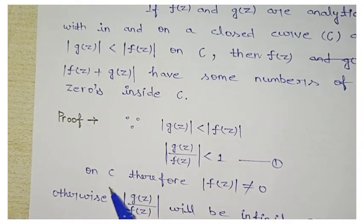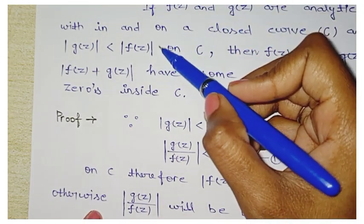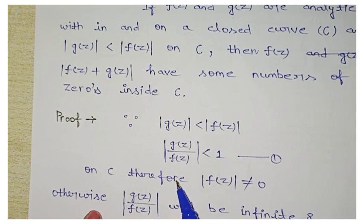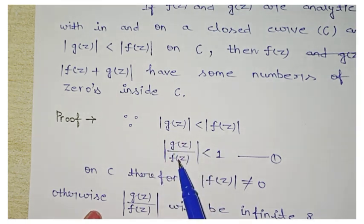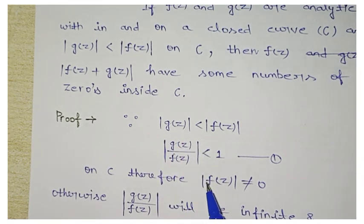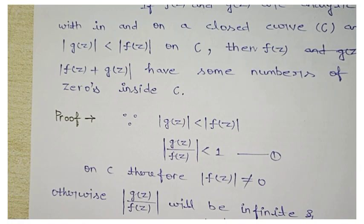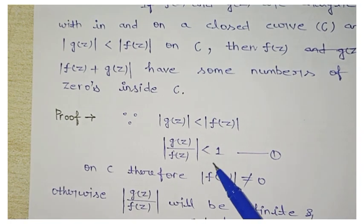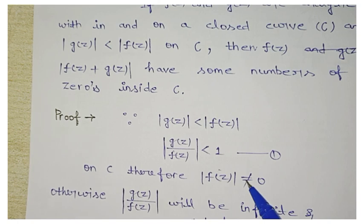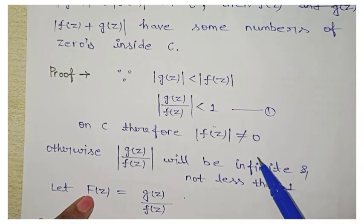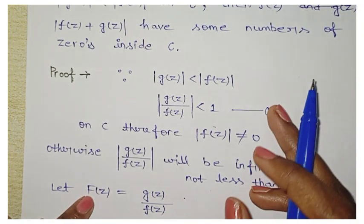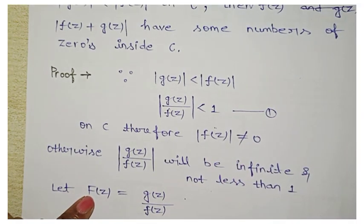You should note this as equation number one, on C. Therefore, mod of f(z) doesn't equal zero — because if it becomes zero, then g(z)/f(z) would become infinity, and we wouldn't be able to solve it. So mod of f(z) ≠ 0 on C. Otherwise, if f(z) equals zero, then mod of g(z)/f(z) will be infinity and not less than one.